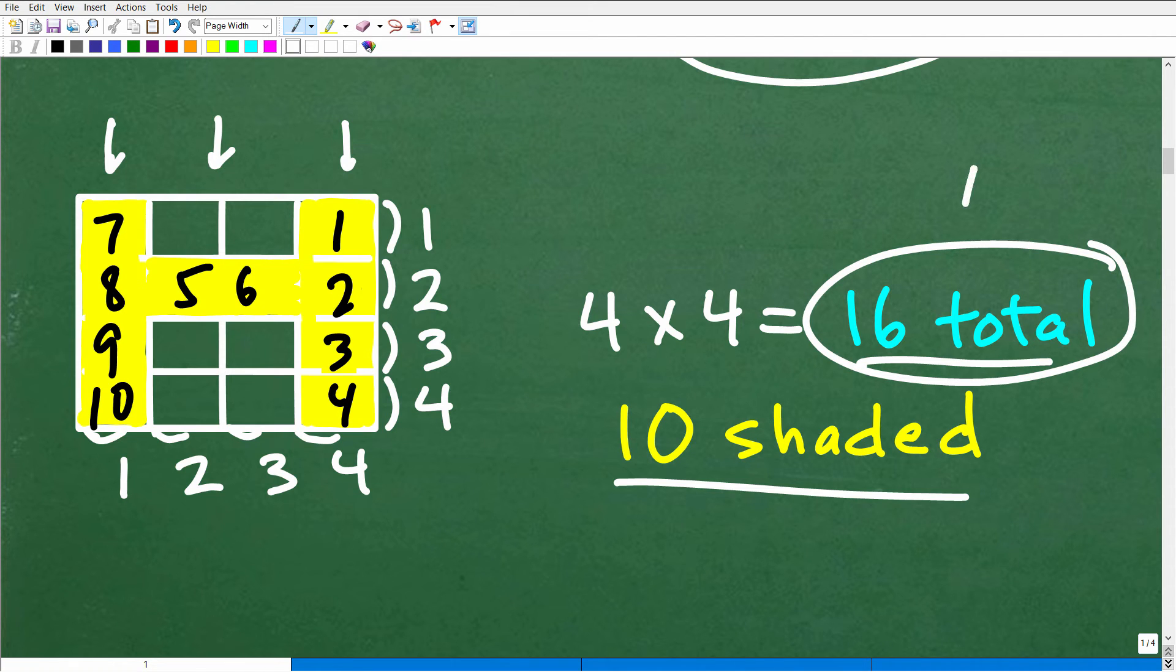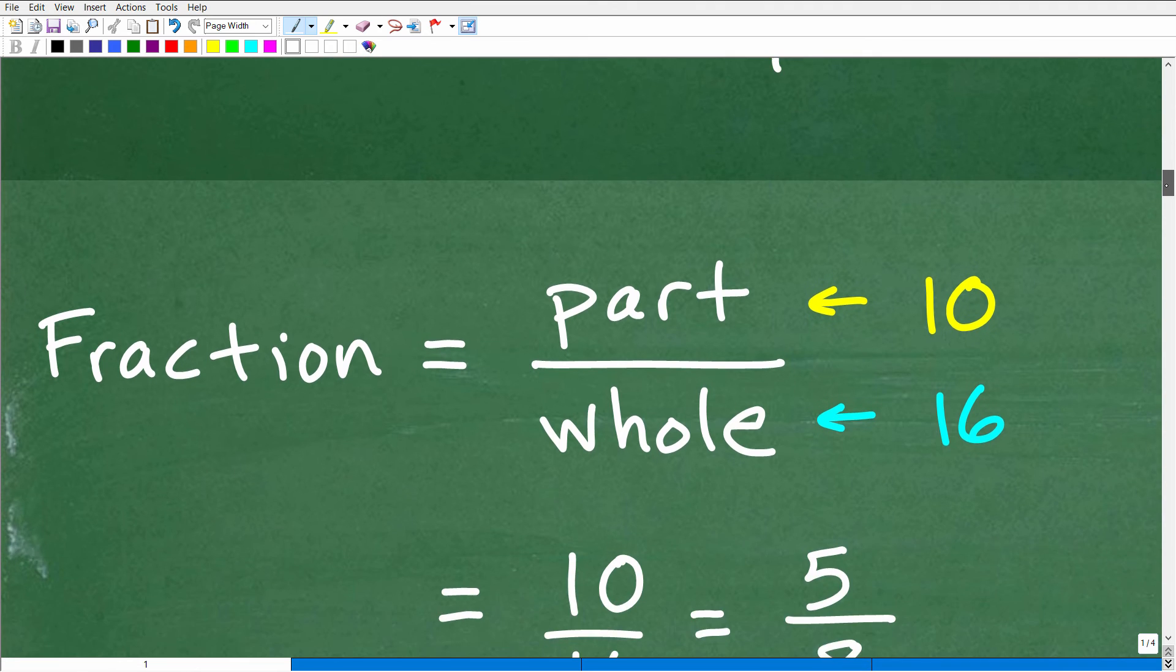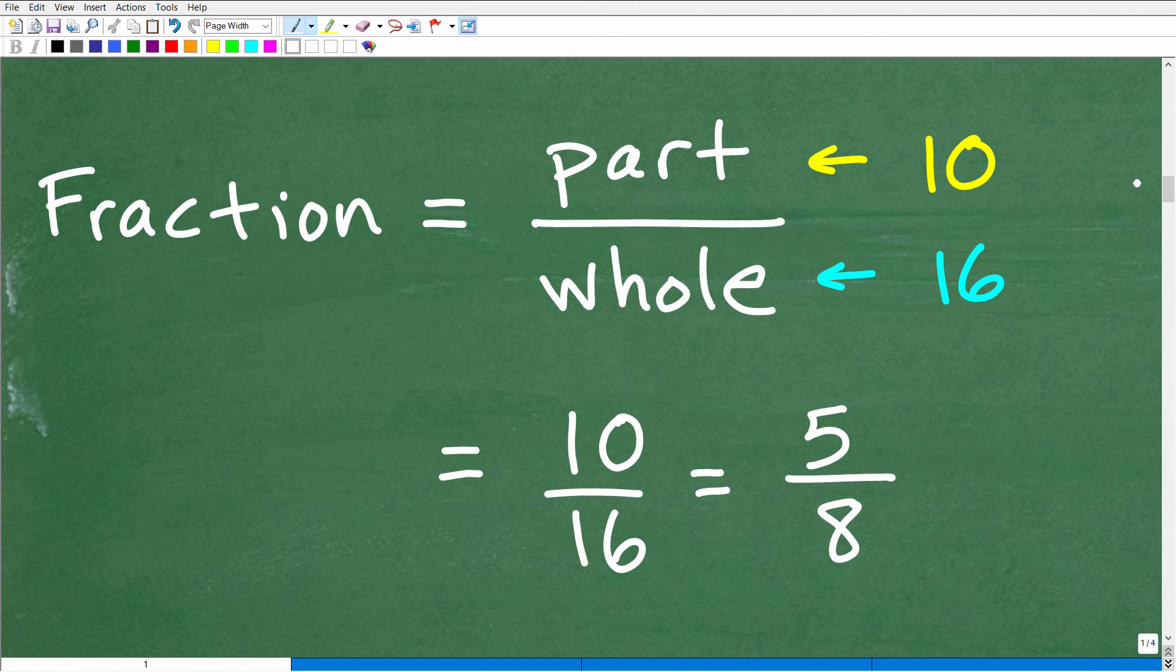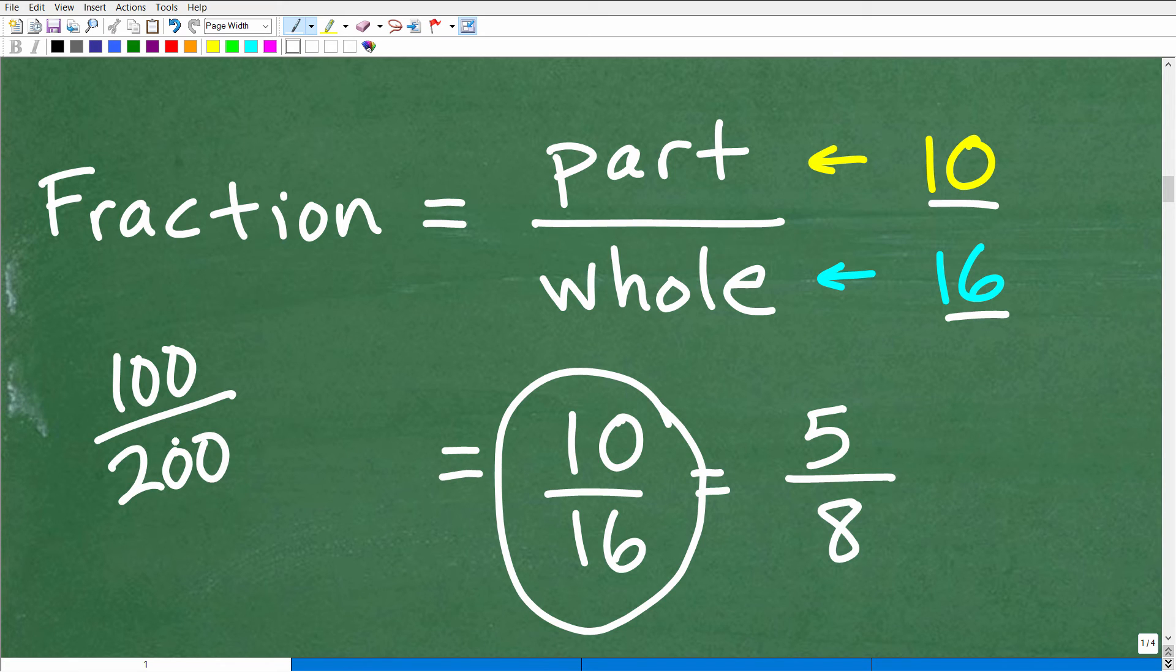So now we have our total, or our whole, and we have our shaded amount, which is our part. So let's put this all together. Our fraction, or we can think of any fraction as a part out of a whole. So the part here is ten of those boxes out of a total of 16 is shaded. So that gives us the fraction 10/16, but you never leave a fraction unsimplified. In other words, if I gave you the fraction 100/200, would you just want to write 100/200 all day long? No, of course not. We would just simply write the fraction 1/2. You always simplify. And here we can reduce or simplify the fraction 10/16, and that is going to be equal to 5/8, right? So 2 goes into 10, 5, and 2 goes into 16, 8.